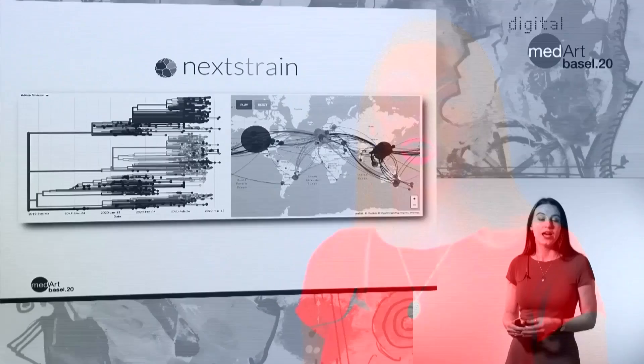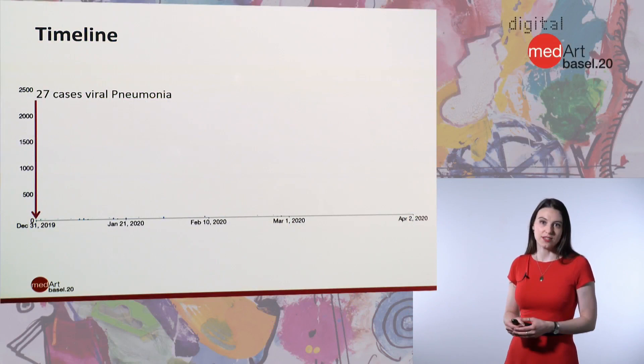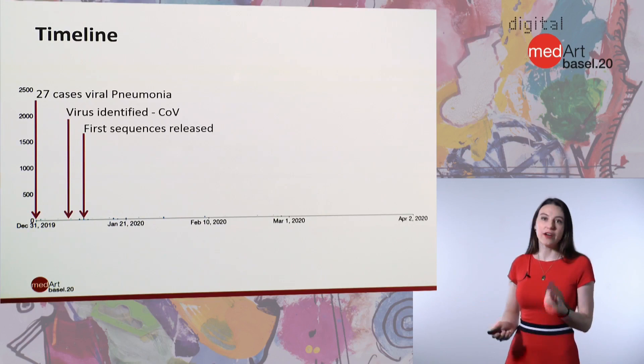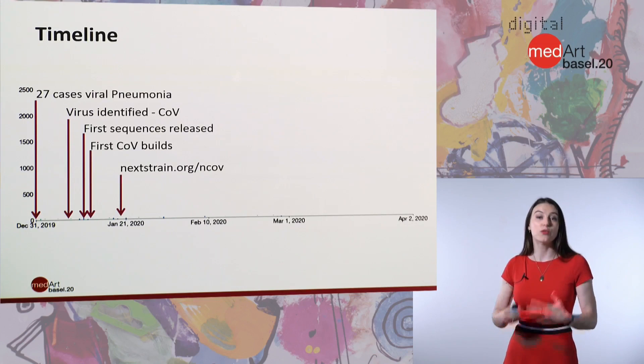Let's take a brief look at the timeline of this virus. It was only a short while ago, in December of 2019, that the first 27 cases of viral pneumonia were identified in Wuhan, China. Just a few weeks later, the virus was identified as a novel coronavirus, and shortly after that, the first sequences were released. Soon after these sequences became available, Nextstrain made their first build showing how the new coronavirus related to other coronaviruses in the family.